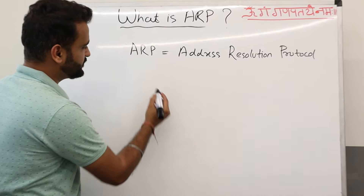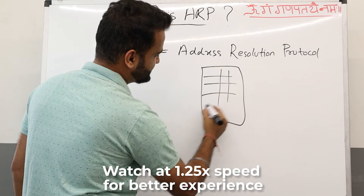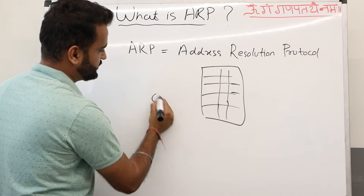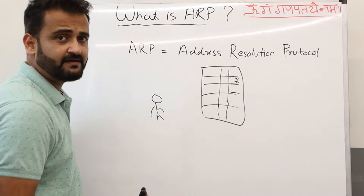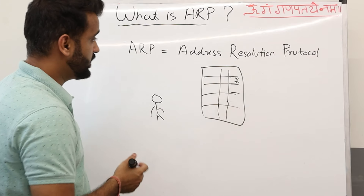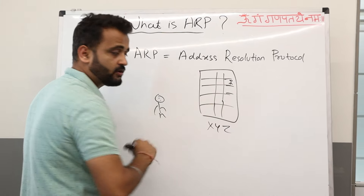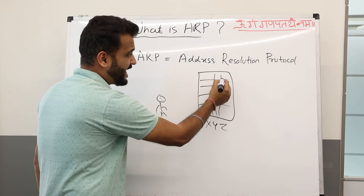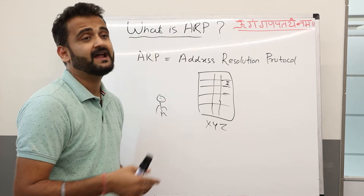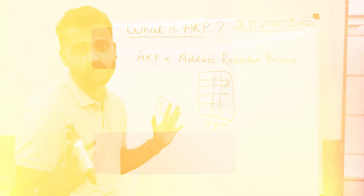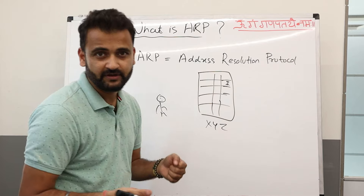Taking a real life example — suppose there is a service apartment with different houses, and this is you, and somewhere here your friend Mohan lives. You know the name of this apartment — say XYZ building — but you don't know at which floor or flat your friend lives. Imagine we are not in the age of mobiles.